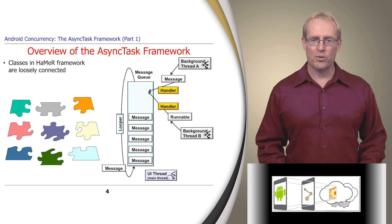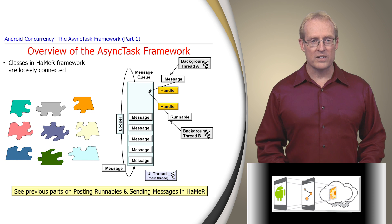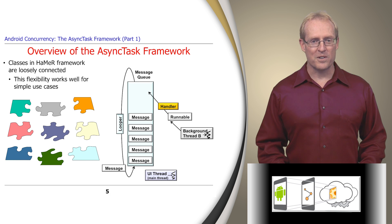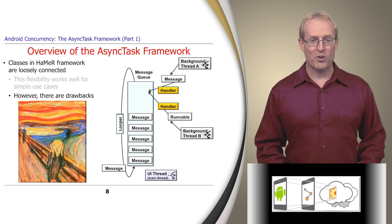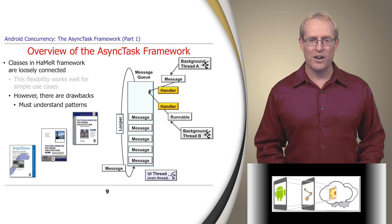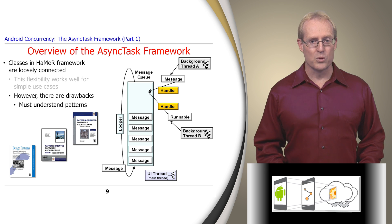The Looper, Handler, Thread, Message, and Runnable classes in the Handler framework discussed in previous videos are relatively loosely connected, which is flexible and works well for simple use cases, such as posting runnable commands from a background thread to run in the user interface thread. However, these loose connections also require users of the Handler framework to understand the patterns that guide the structure of and interactions between its classes, especially if they want to implement more sophisticated concurrency models, such as pools of threads that take advantage of multi-core chipsets.